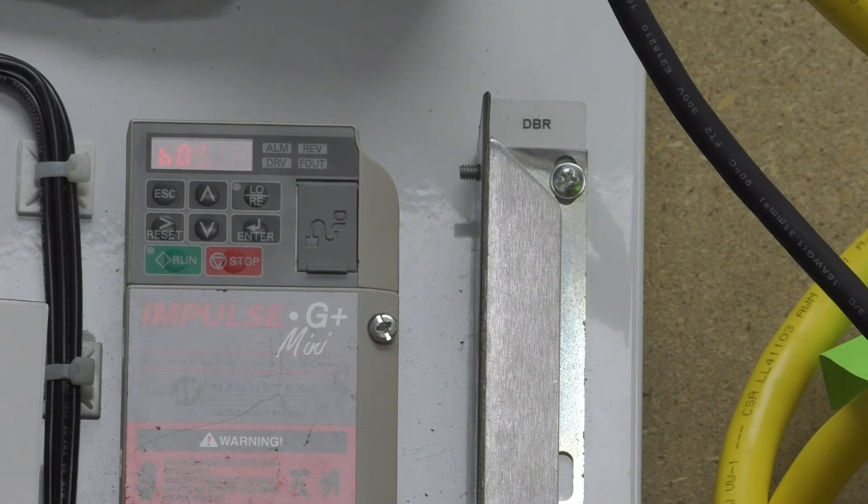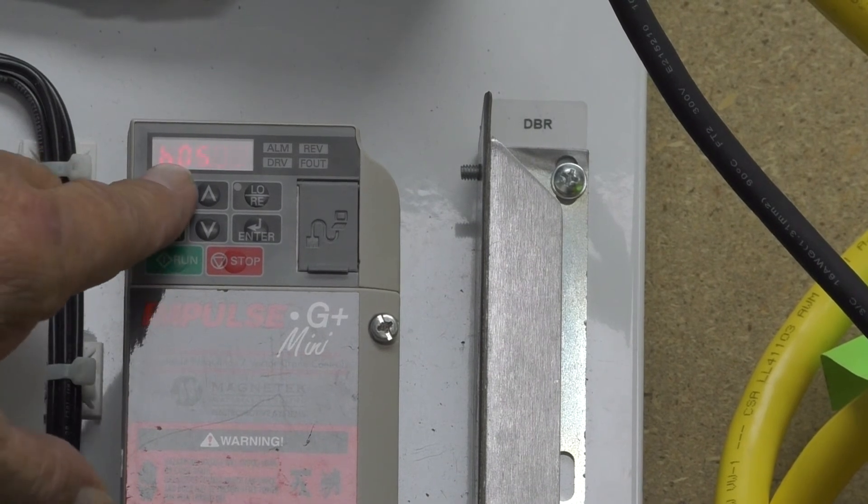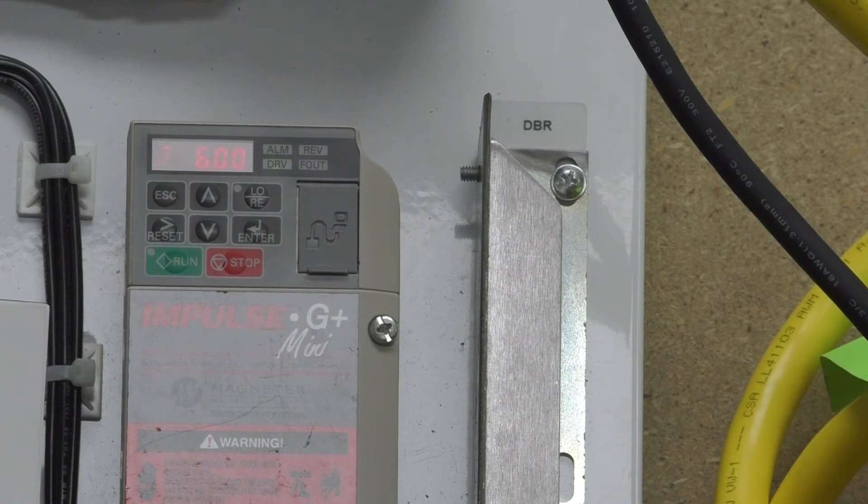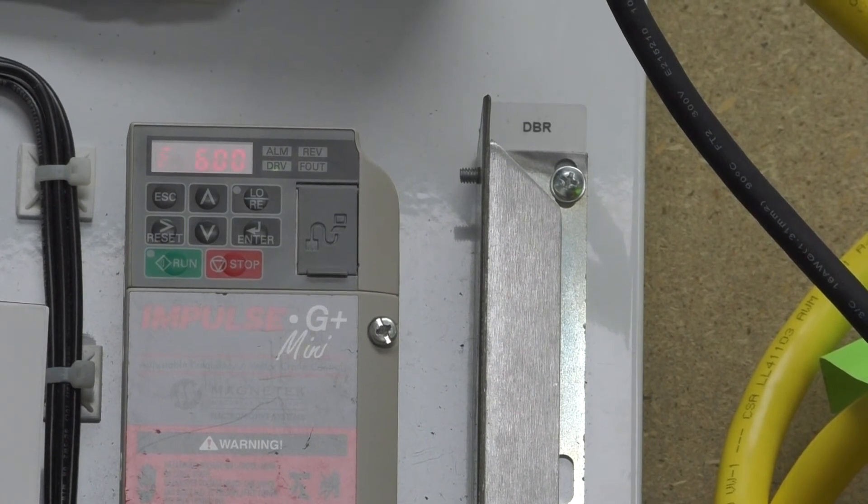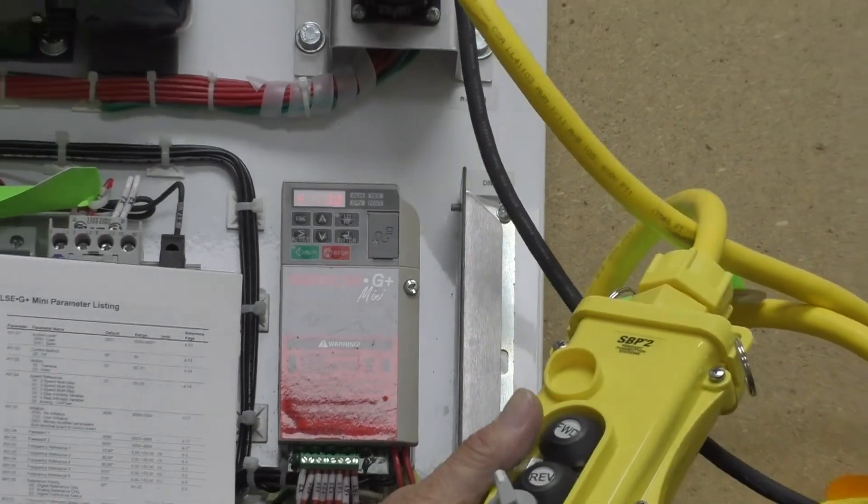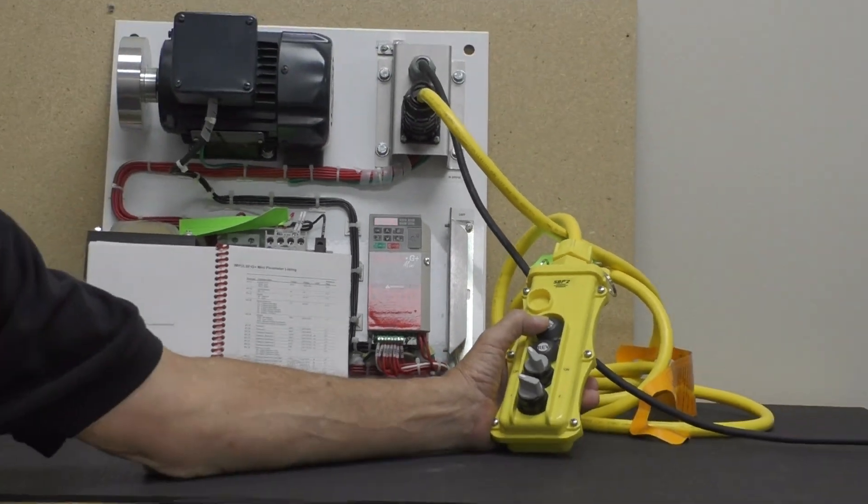To get out of the program, you hit escape several times to get back to F60.0. Now I take my push button and I'm going to depress the push button and see if this works.